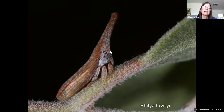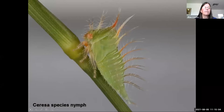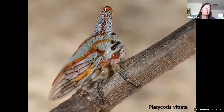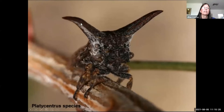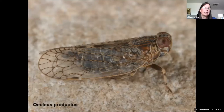This membracid has a huge structure above its eye that makes it look like a thorn. The membracid nymphs can also be very fanciful looking. This is an oak treehopper — really beautiful. This one found on cat claw acacia has little eyes here, and it's got two spines coming out of its head that mimic the thorns on an acacia. Some planthoppers like Ecleuis have nymphs that live underground instead of up on leaves.